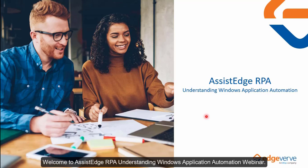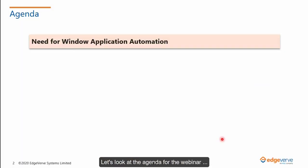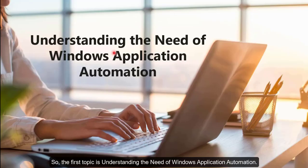Welcome to Assistage RPA Understanding Windows Application Automation Webinar. Let's look at the agenda for the webinar: the first topic is the need for Windows Application Automation.